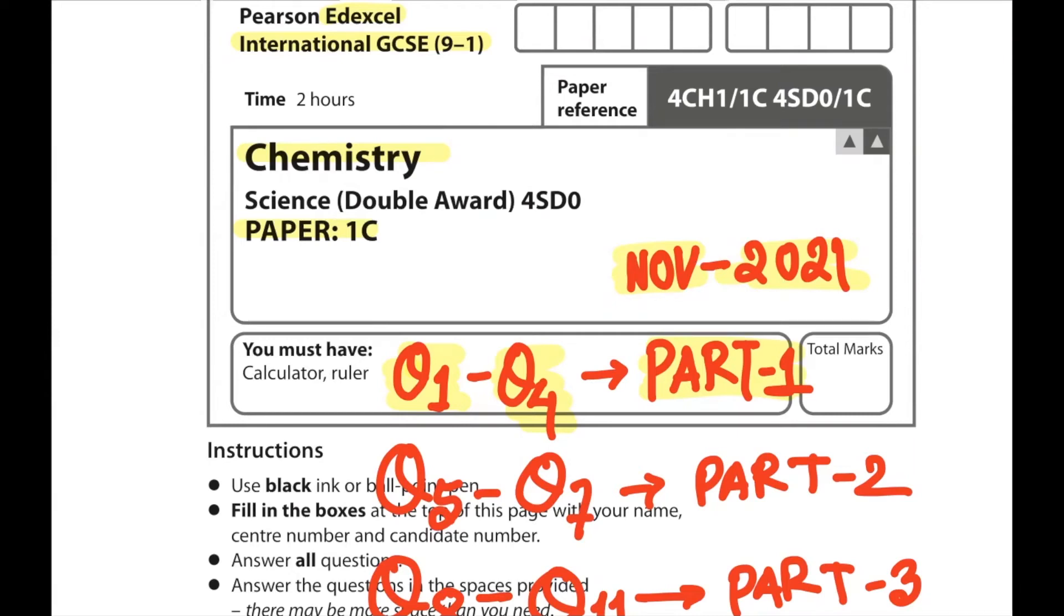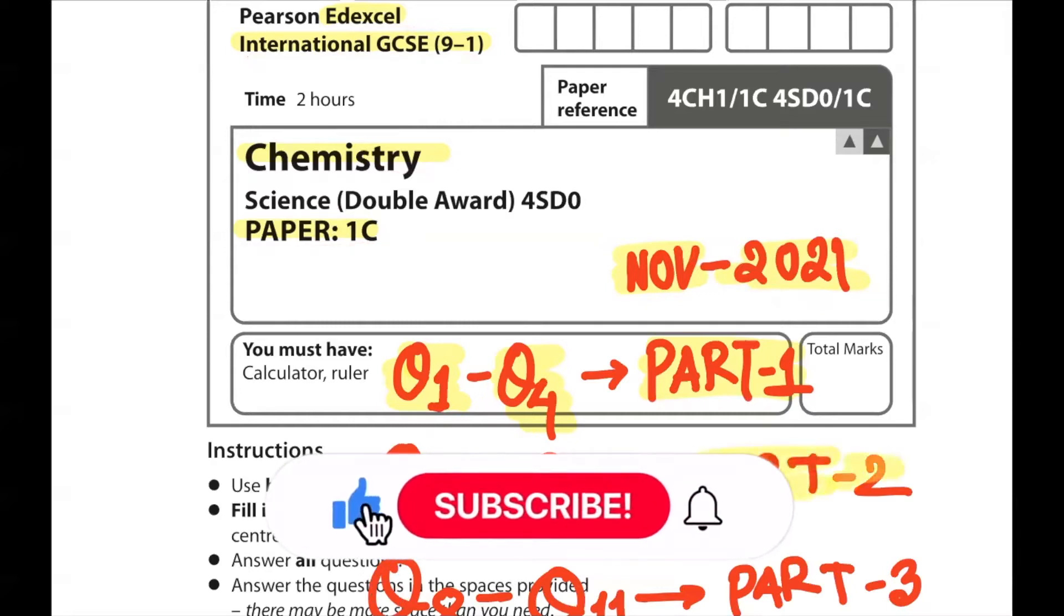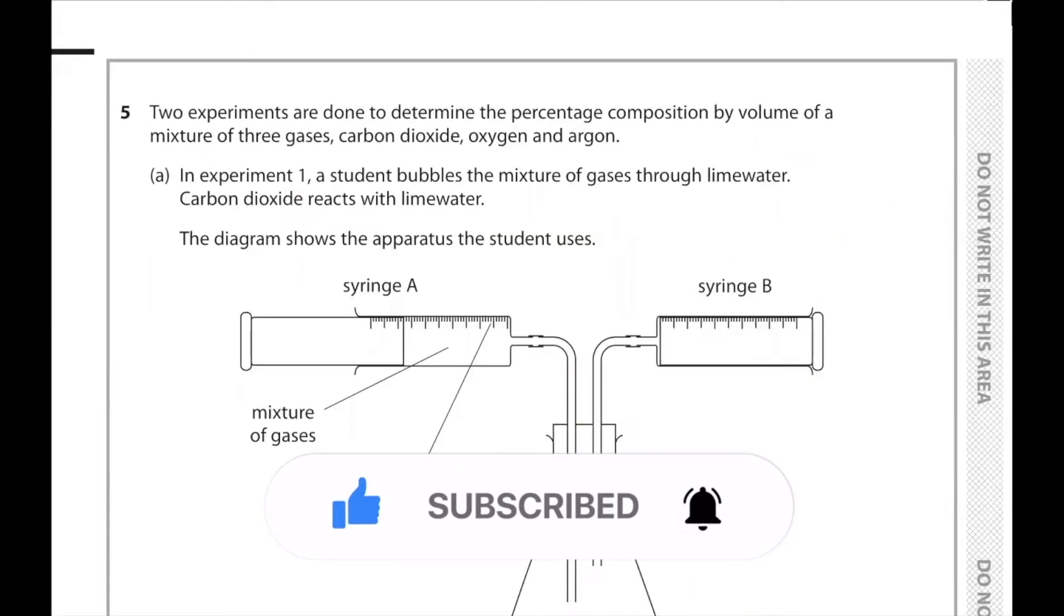Hello everyone, today we are solving Edexcel International IGCSE Chemistry Paper 1C November 2021, question number 5 to question number 7 in our part 2 video. If you haven't seen the part 1 video, we'll have a link in the description.